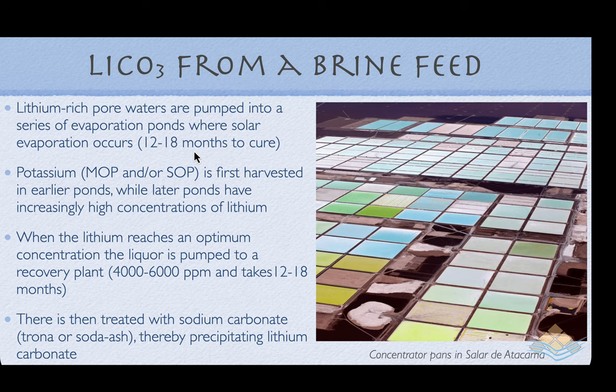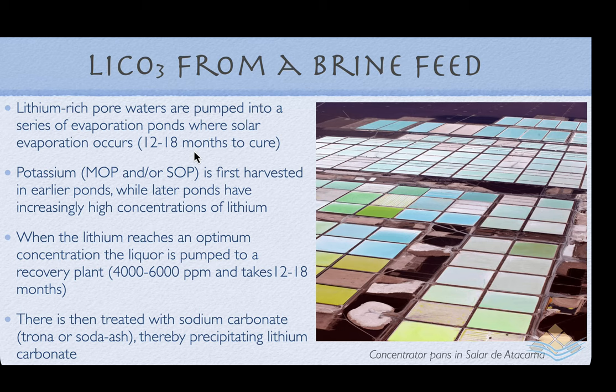Along the way we pass through the various bittern salt saturation stages, and we can remove economically muriate of potash and also process to obtain sulfate of potash from the less saline bittern pans. Fertilizer is a by-product of the concentration process in these pans. Once the brine is taken off the system into the processing plant, it's treated with trona — sodium carbonate, soda ash — to precipitate the lithium carbonate. Water is required for this process to mix and create the double salt precipitation of lithium carbonate.